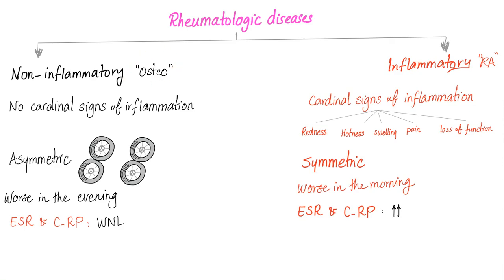Non-inflammatory arthritis such as osteo has no cardinal signs of inflammation. It is asymmetrical. It's worse in the evening because it's mechanical — the more you move, the worse it gets. ESR and CRP are normal. But in inflammatory arthritis, we do have the cardinal signs of inflammation: redness, hotness, swelling, pain, loss of function — rubor, calor, tumor, dolor, functio laesa. Inflammatory arthritis such as rheumatoid is symmetrical because it's caused by autoantibodies that do not discriminate between right knee and left knee. Rheumatoid's pain is worse in the morning because there are tons of autoantibodies and inflammatory debris in the joint. However, as you walk and move throughout the day, they get washed away. ESR and CRP are elevated because it's an inflammatory, systemic arthritis.